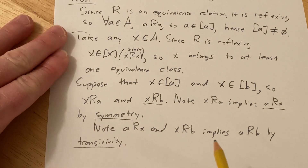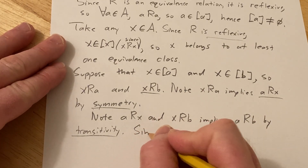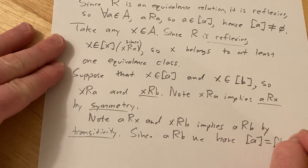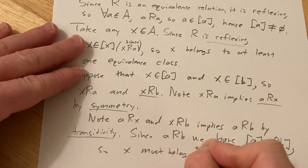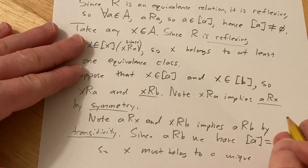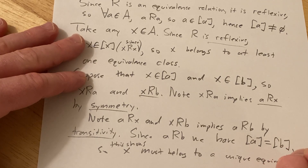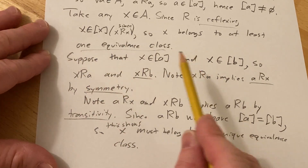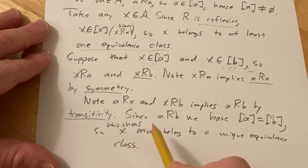That's another property of an equivalence relation. So we've used symmetry, transitivity, and reflexivity — all the key properties. And then since a is related to b, we have that the equivalence class of a is equal to the equivalence class of b. So this shows that they're the same, meaning x must belong to a unique equivalence class.